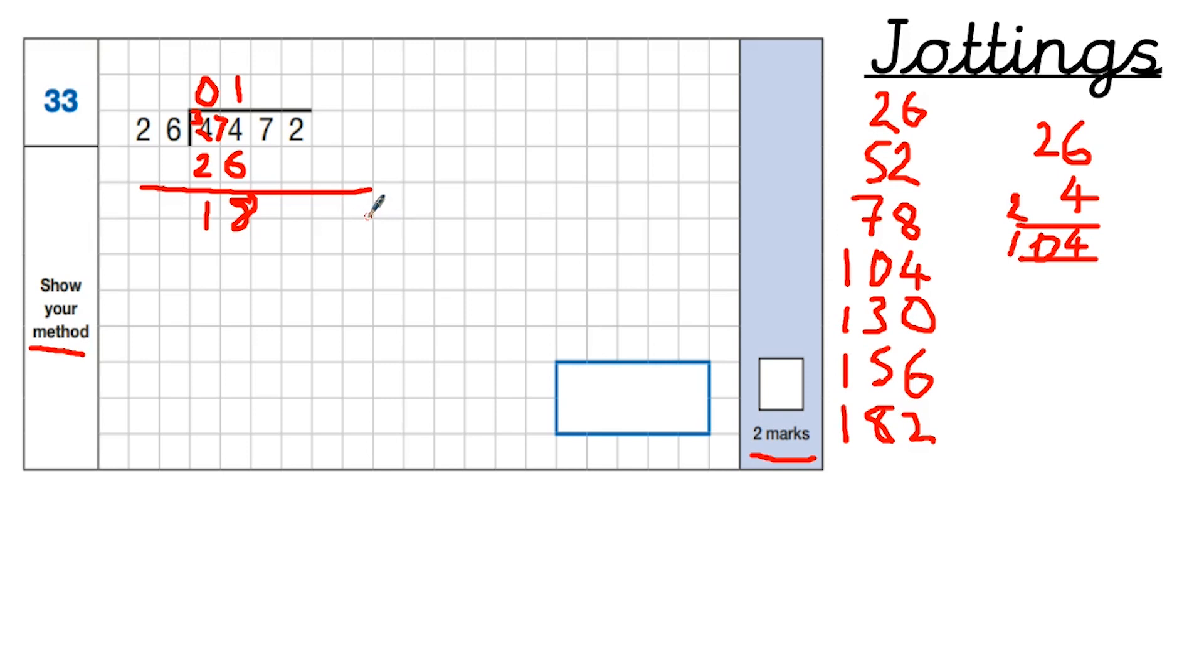Now we're left with 18. What we need to do now is to bring the 7 down. Bring the 7 down gives us 187. So how many times does 26 go into 187? Well if we go down it actually goes in 7 times. So we're going to put a 7 here. And we're going to write 182 underneath as we did before. And we're going to take that away again. So 7 take away 2 is 5. 8 take away 8 is 0. And 1 take away 1 is 0. So we're left with 5.